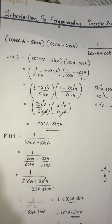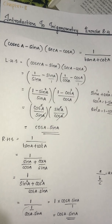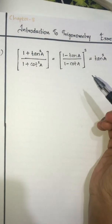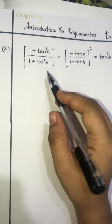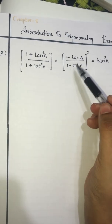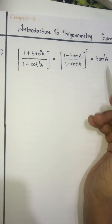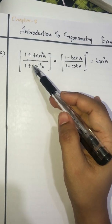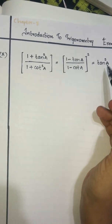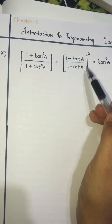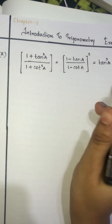Next, we will do the 10th sub-question of our 5th question. That is: (1 + tan²A)/(1 + cot²A) equals tan²A, and also prove that (1 − tanA)/(1 − cotA) whole squared equals tan²A.